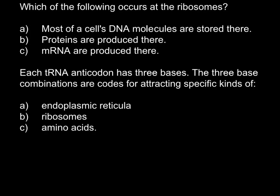Which of the following occurs at the ribosomes? Answer A: most of the cell's DNA molecules are stored there. This is not correct because most of the DNA molecules are stored in the nucleus, and some of them are also present in the mitochondria. Mitochondria are of course much smaller than the nucleus, so I drew them out of proportion, but you should understand this. So we can cross out answer A.